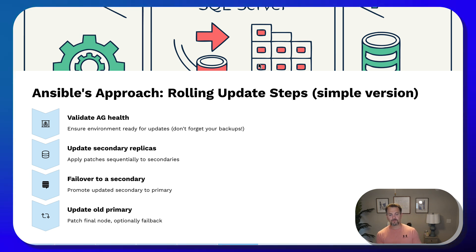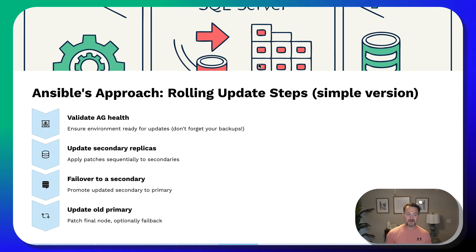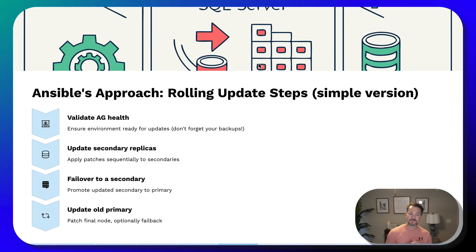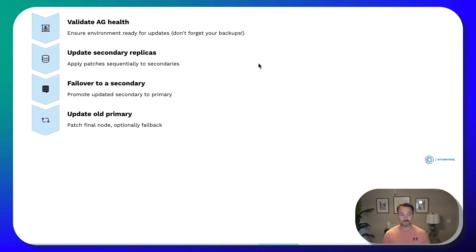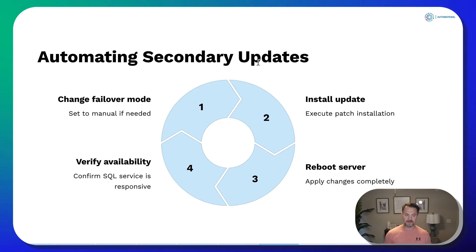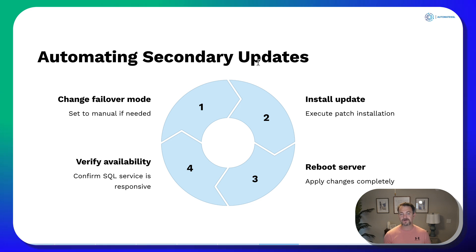The approach we'll take is to build the rolling update steps into our playbook and roles. First, it's going to do all the validation for our AG health. Then it's going to update the secondaries, failover to a secondary, and then update the old primary. When we run our process against each secondary, it's going to change the failover mode — set to manual if needed — and then install the update.